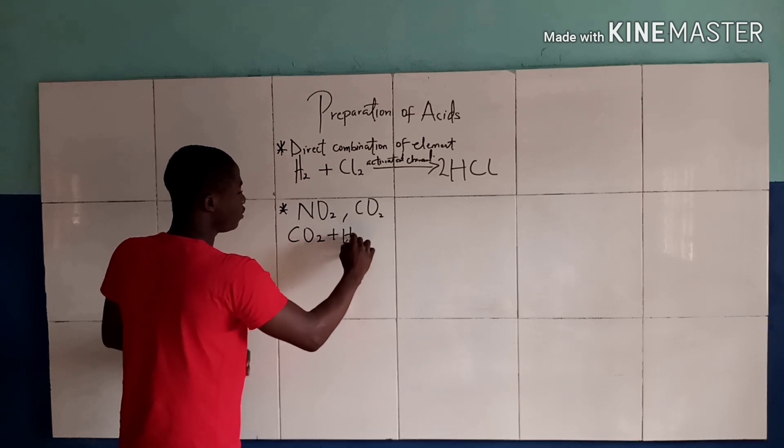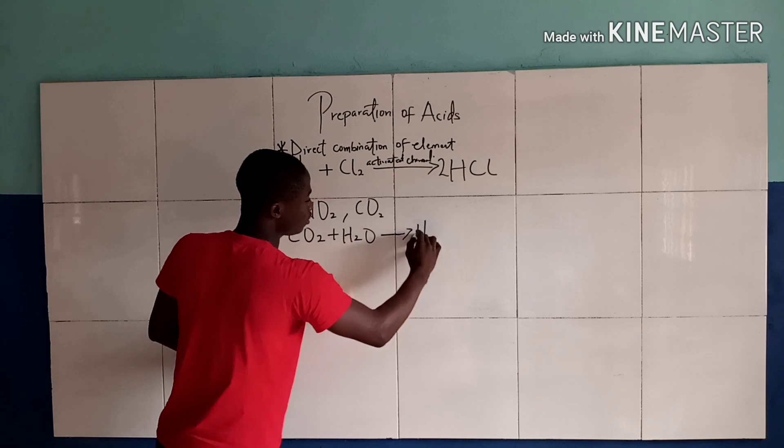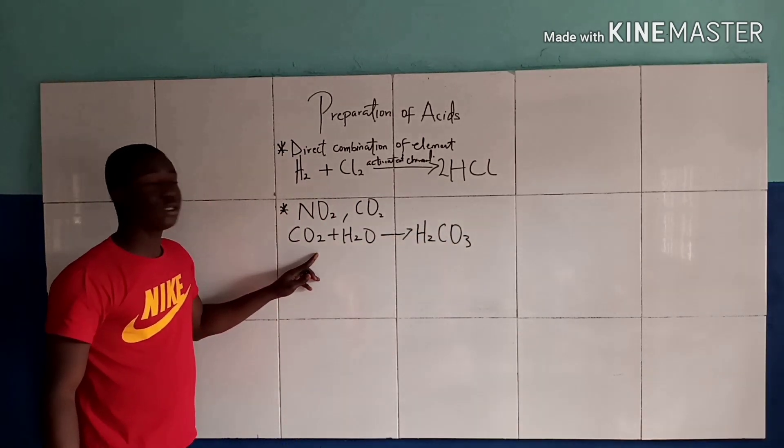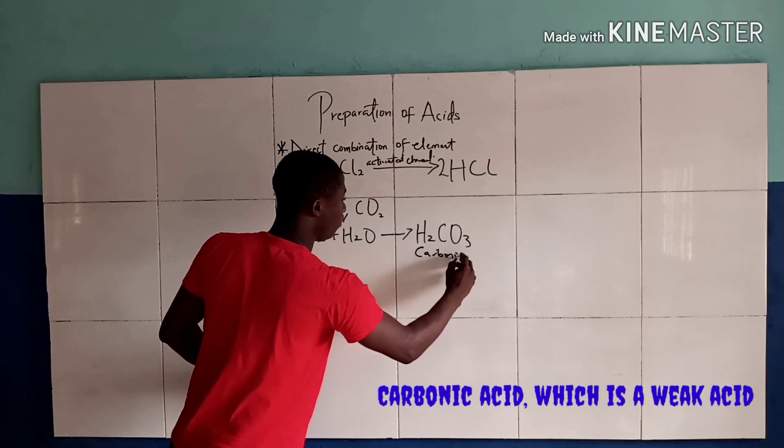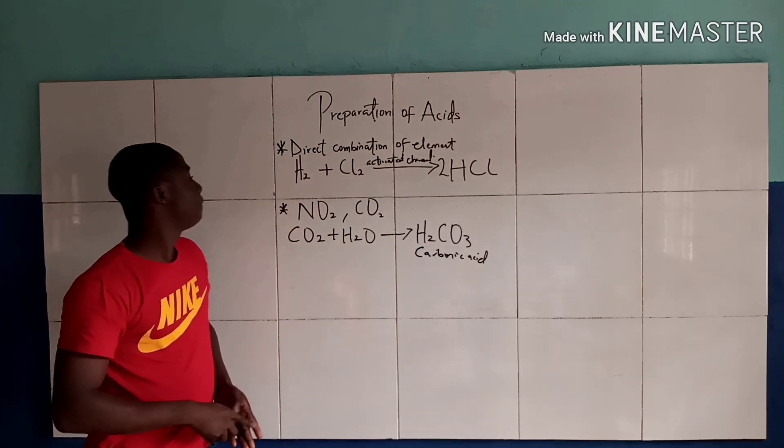For example, CO2 dissolves in water. What we are getting is H2CO3, which is called carbonic acid. It is a weak acid.